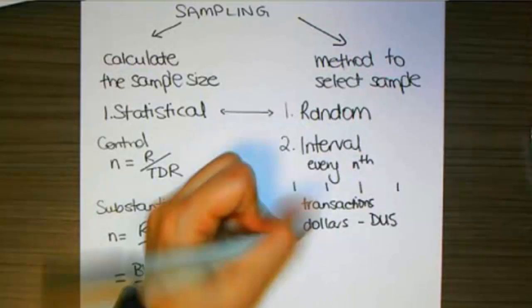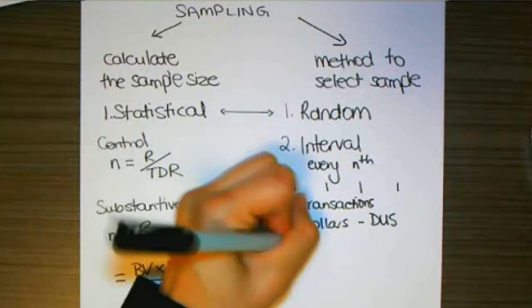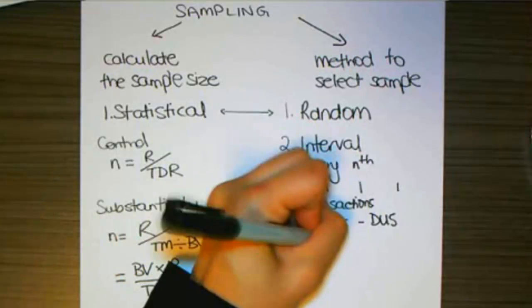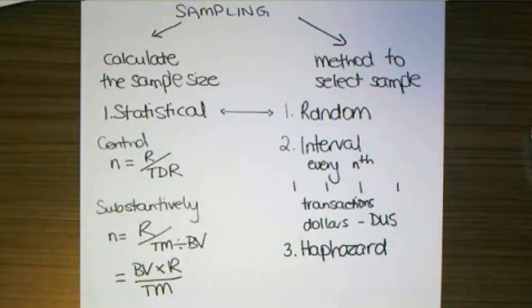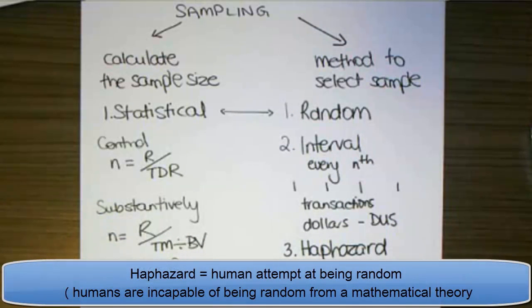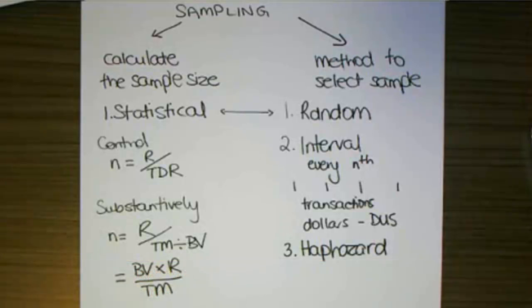Our third method is haphazard. And I like to describe haphazard as being the human equivalent to being random. So in random sampling, we'll use the probability theory and a random number generator. In haphazard sampling, I'll use my own human ability in an attempt to be random.